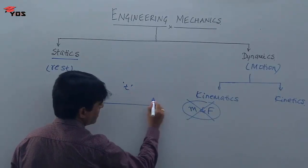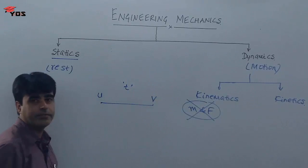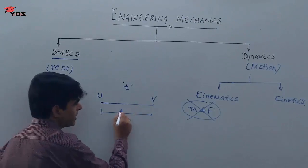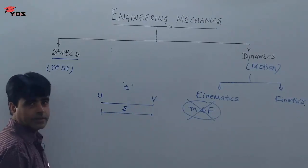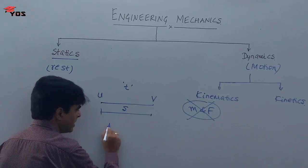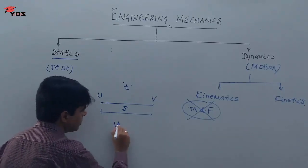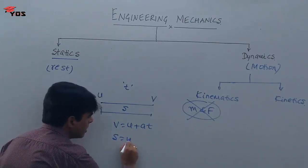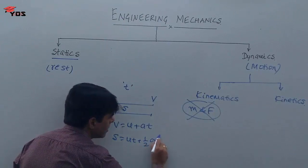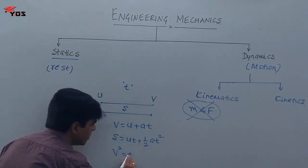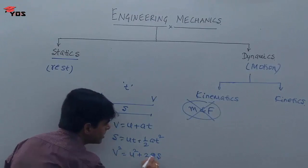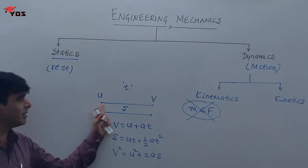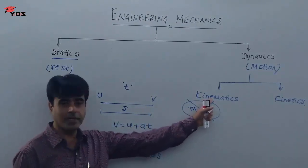For example, as you studied in 11th or 12th standard: a particle with initial velocity u meters per second, after time t seconds, attains final velocity v meters per second, with displacement s. The equations are: v = u + at, s = ut + ½at², and v² = u² + 2as. Here there is no force or mass but the particle is in motion — that is kinematics.